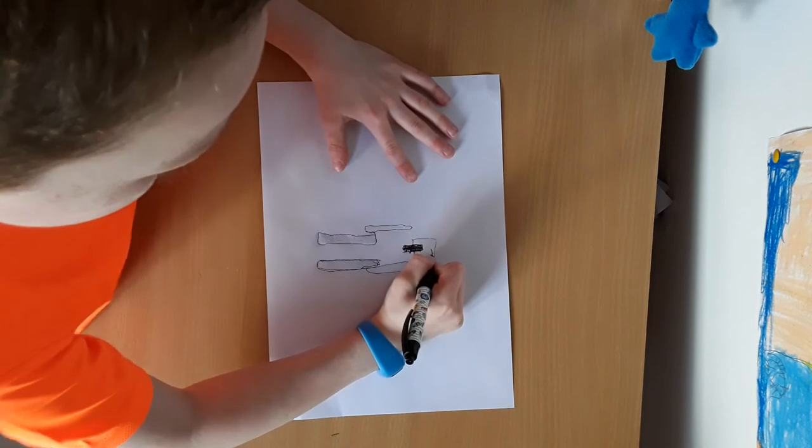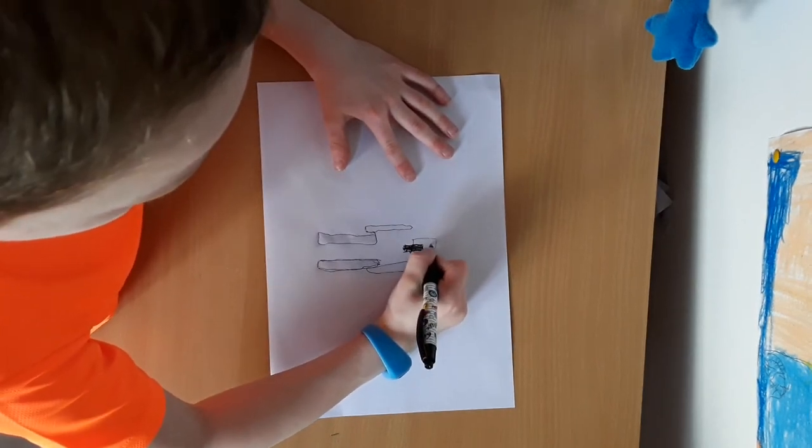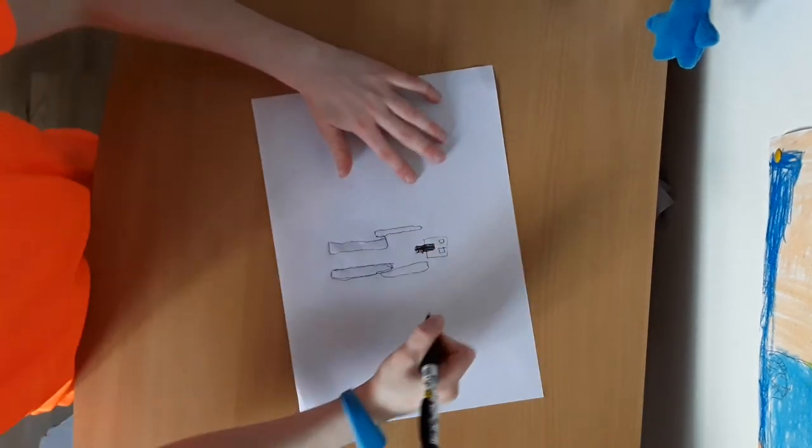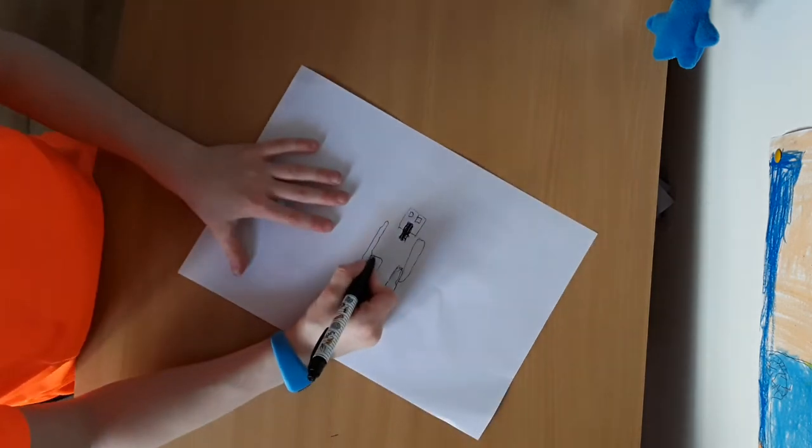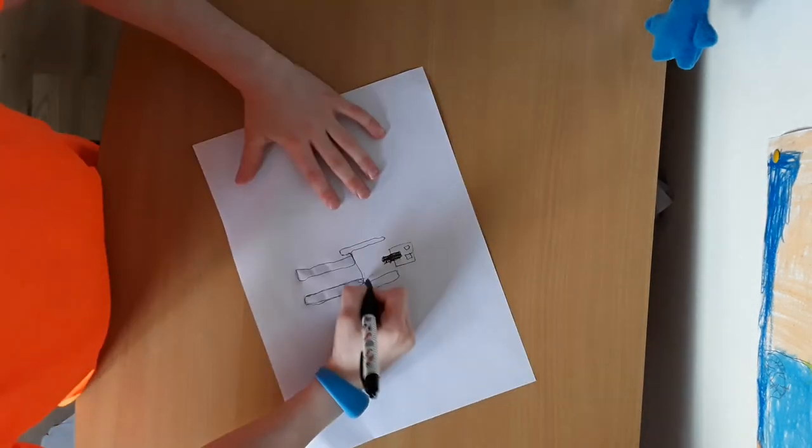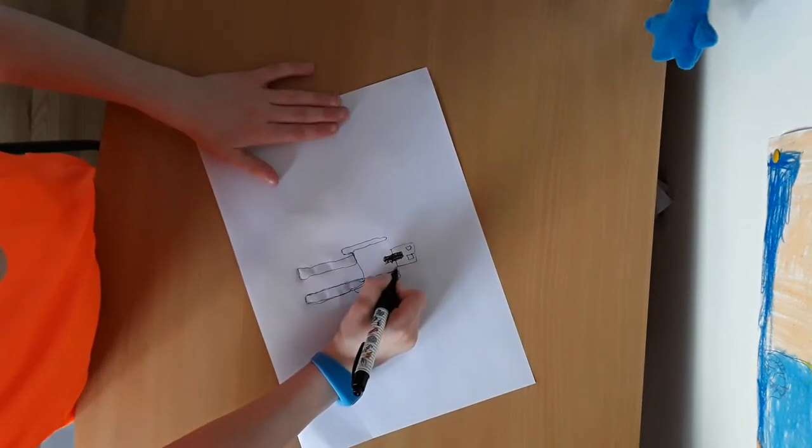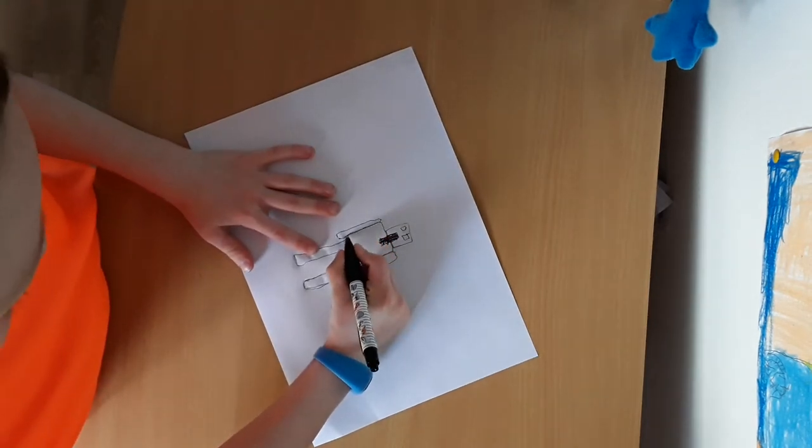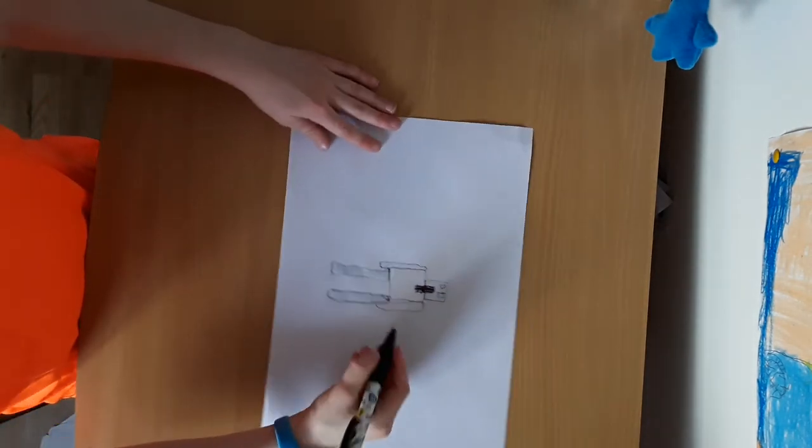And then two squares and then you want to draw a line across, line up and across, line down, and you can color in if you want.